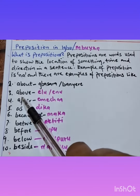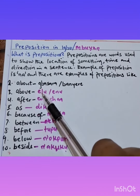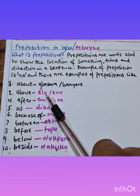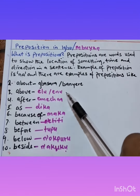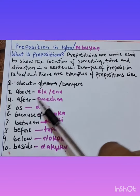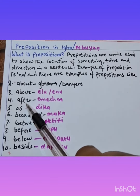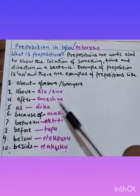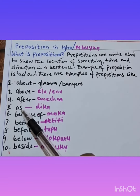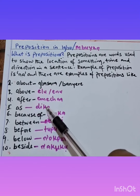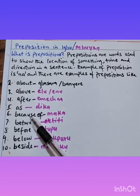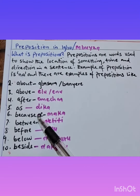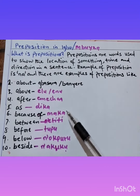Above — 'elu' or 'nenu'. After — 'emecha'. As — 'deka'. Because of — 'maka'.